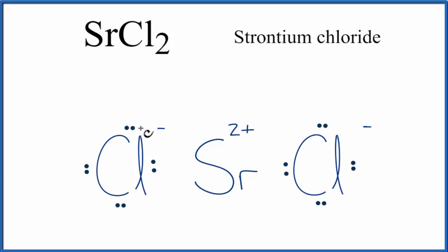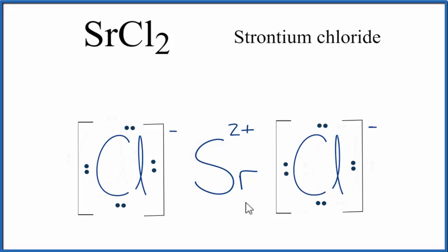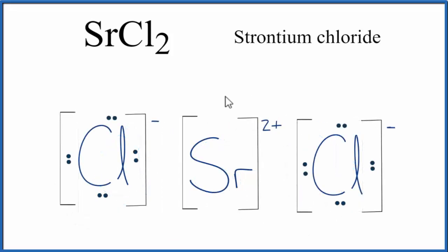We should put brackets around the chlorine atoms, and you'll sometimes see brackets around the positive ion. We need the brackets to show that this is an ionic compound, and that the valence electrons from strontium were transferred to the chlorine. So the strontium lost those electrons, those valence electrons, and the chlorine atoms, they gained them.